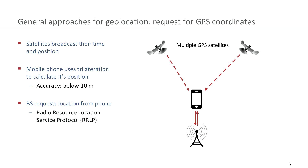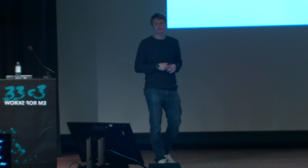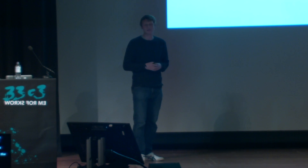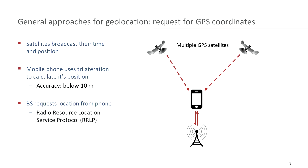Most of you will know a little bit about GPS and how it's calculated. GPS satellites broadcast their time and their position, and the mobile phone uses trilateration to calculate its position. The accuracy is usually below 10 meters, but it depends on the chipset within the mobile phone. The base station can then request the position of the phone by issuing a request with the Radio Resource Location Service Protocol.